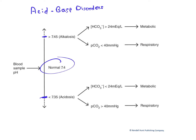Let's look at lower than normal arterial blood pH first. That condition is referred to as acidosis. There are actually two primary causes of acidosis. One is a partial pressure of carbon dioxide in the arterial blood greater than 40 millimeters of mercury. Clinically, this is called hypercapnia, and typically it's caused by the respiratory system failing to eliminate CO2 at an appropriate rate into the atmosphere.